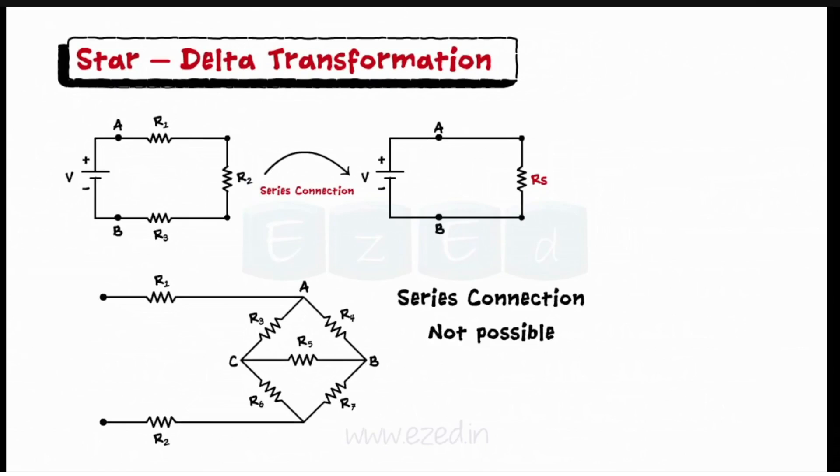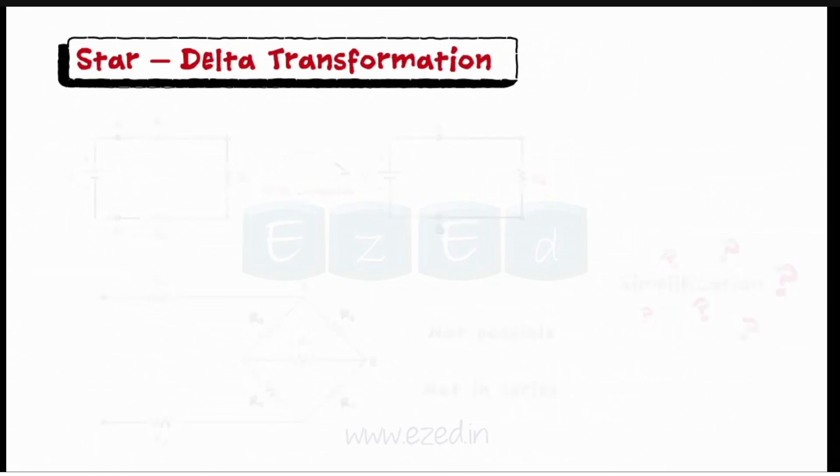In the network shown, resistances R3 and R6 or R4 and R7 seem to be in series, but they are actually not. So how to simplify these types of networks?